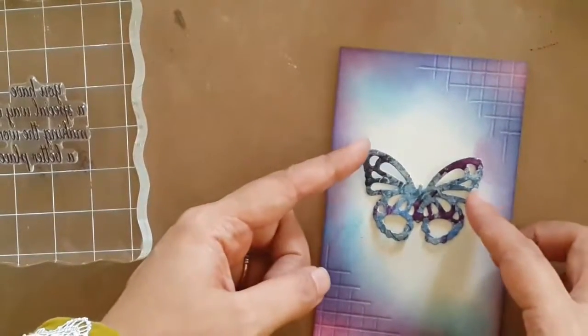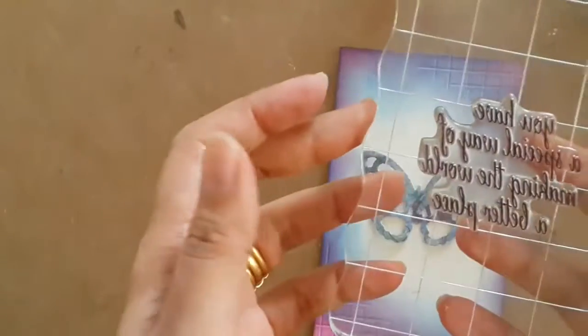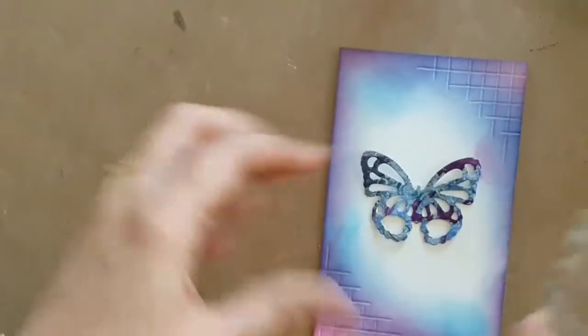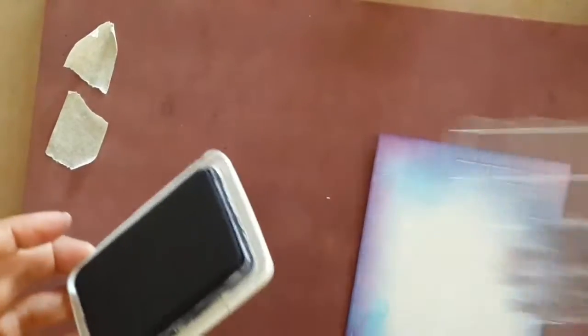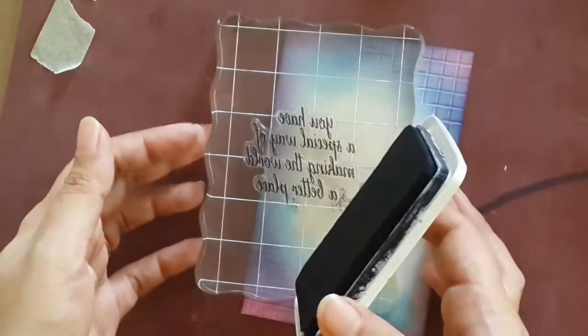So I think this is where I'll keep it, and the sentiment 'you have a special way of making the world a better place.' I think I'm going to have some of it on the top and half of it at the bottom. So I need to ink up my stamp.